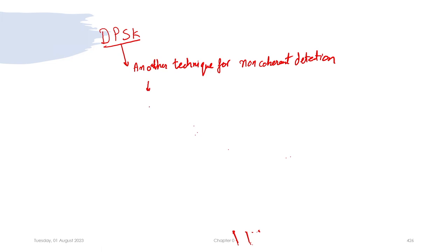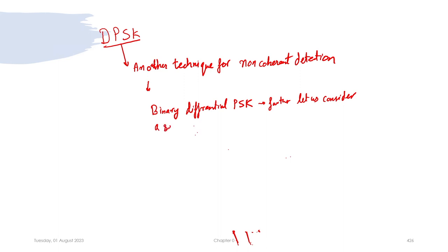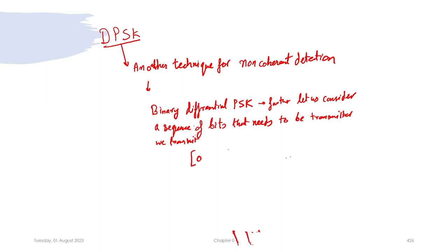In differential phase shift keying, we consider as an example binary DPSK. In this example, let us consider a sequence of bits that needs to be transmitted. Say, we transmit: 0, 1, 1, 0, 0, 1, 1, 1, 0.